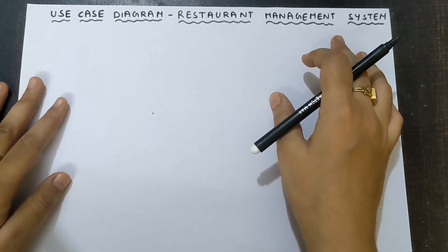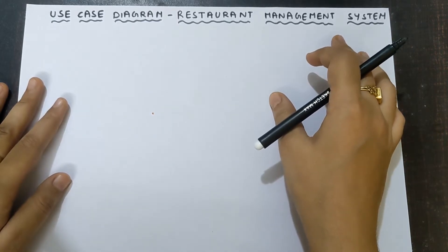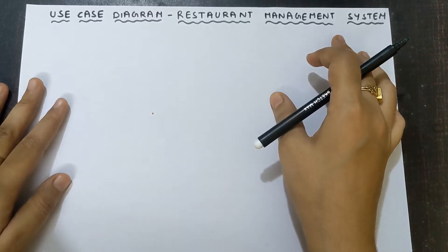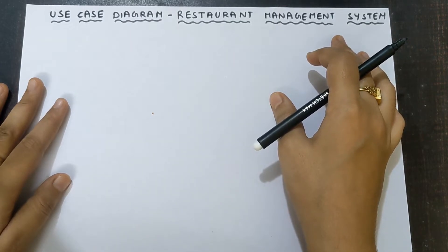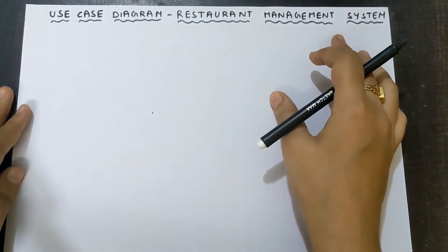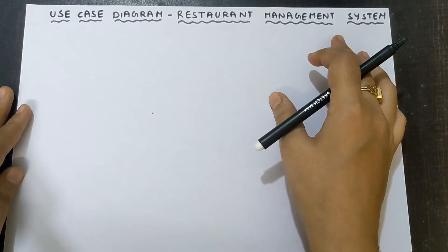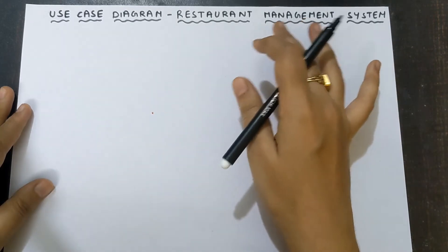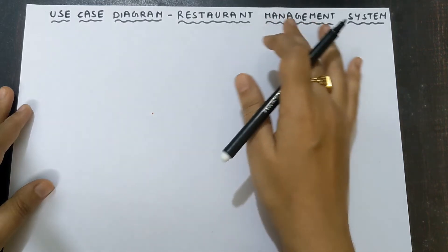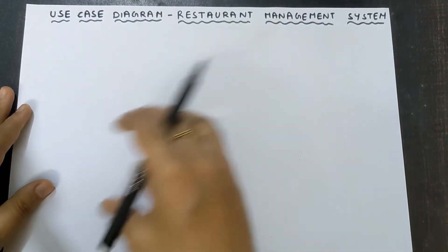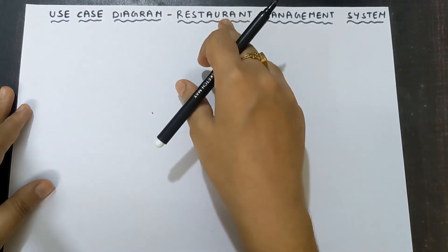The first step is we need to draw the actors in a use case diagram. You have to use a minimum of three actors. Actors are mainly related to the topic that is given to us. Here, if it is restaurant management system, the actors should be related to the restaurant only.